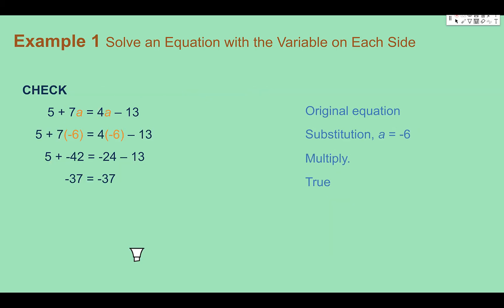As always, we need to check to see if we got the right answer. When we plug in a equals negative 6 back into our equation, do we continue to have a true statement? If I multiply stuff out, I end up with negative 37 equals negative 37. My final statement is true, so the answer must be correct. Negative 6 is the correct answer.